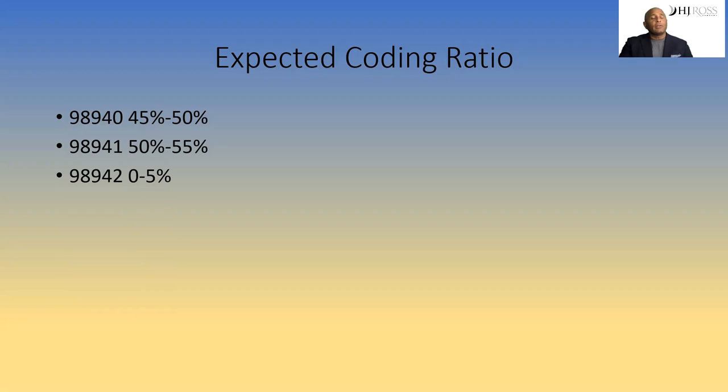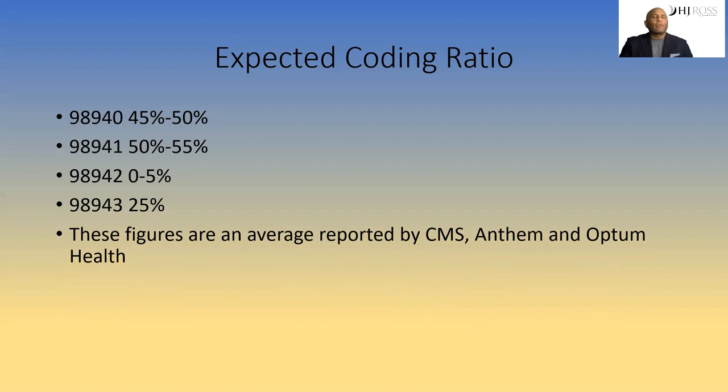Look at your coding ratio to see if you fall outside of these, because you're more likely to get an audit. I'm not afraid of audits, but with an audit we have to make sure we can justify. Now, what about 98943? They will say about 25%, though I've seen some say as much as 40%. The big issue for 98943: make sure there's a complaint and a specific finding sufficient to do a manipulation to the area.